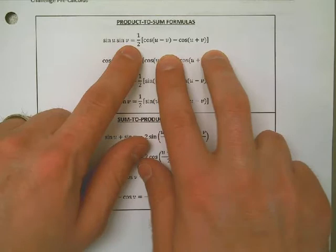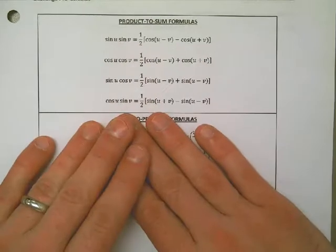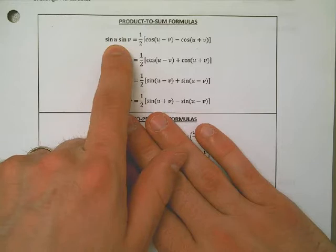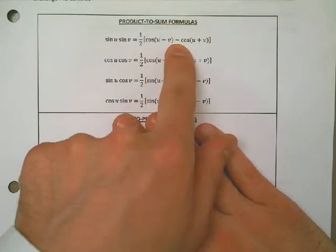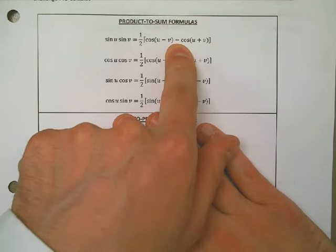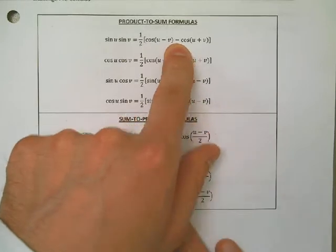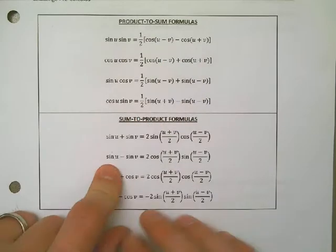Maybe doing some simplification later on. Now what you see here is at the top are product-to-sum formulas. That's because we start with the product, which is multiplication, and we end with the sum, which is addition or subtraction. Or we have the sum-to-product formulas, which go backwards.